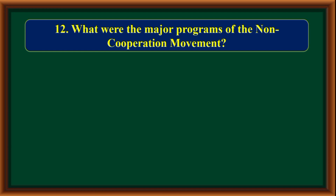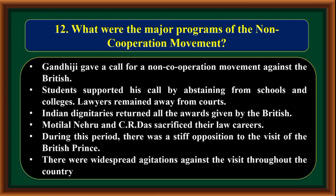What were the major programs of the non-cooperation movement? Gandhiji gave a call for the non-cooperation movement against the British. Students supported his call by abstaining from schools and colleges. Lawyers remained away from courts. Indian dignitaries returned all the awards given by the British. Motilal Nehru and C. R. Das sacrificed their lucrative careers. During this period, there was stiff opposition to the visit of the British prince, and widespread agitations took place throughout the country.